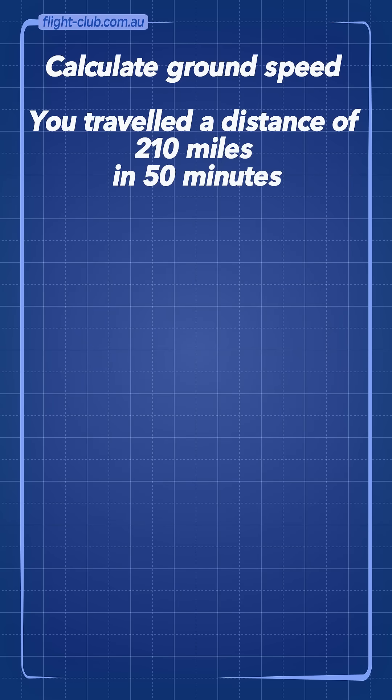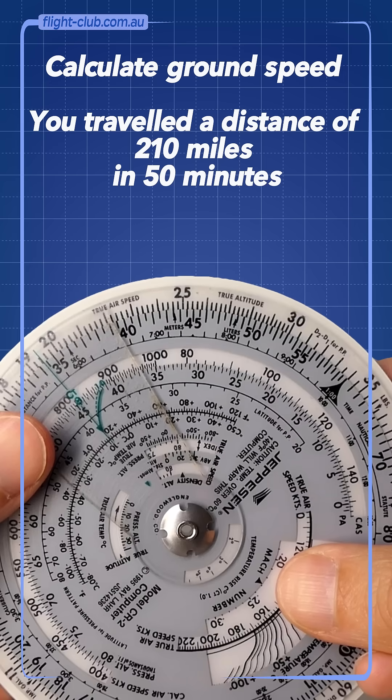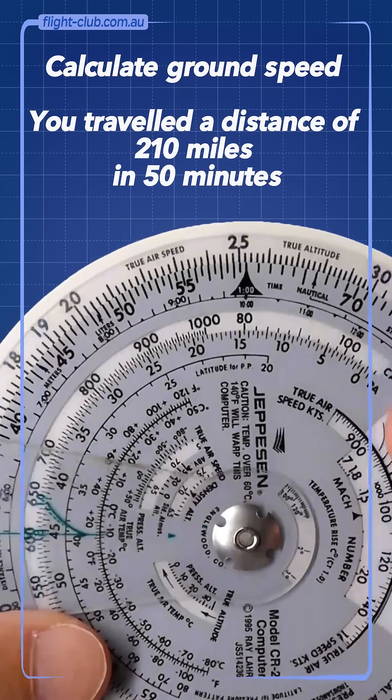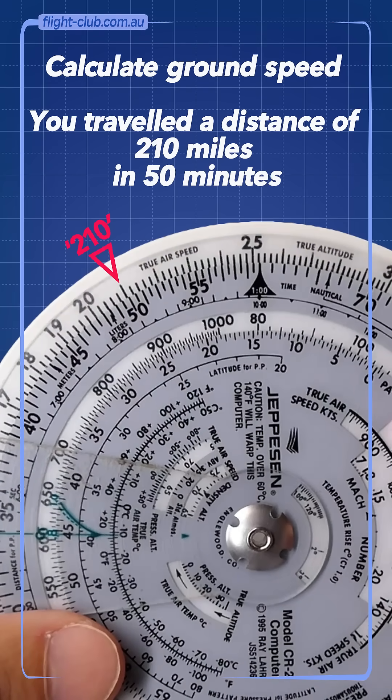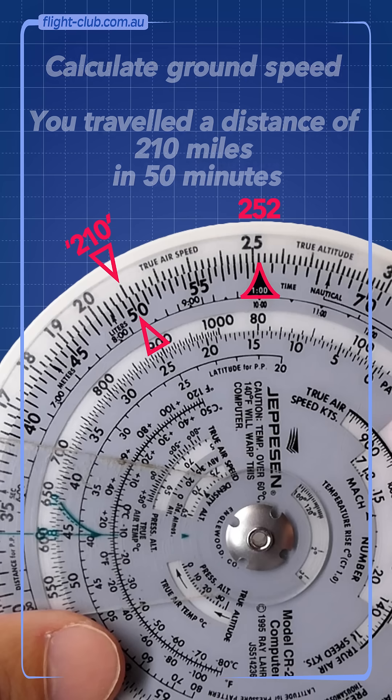Calculate ground speed – you travelled a distance of 210 miles in 50 minutes. Spin the top disc, placing 21 on the outside scale, opposite 50 on the inside scale. Read the answer opposite the time index – 252 knots ground speed.